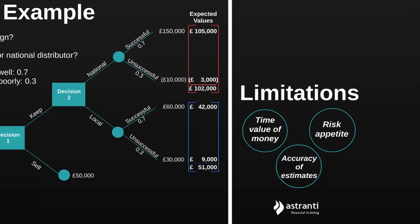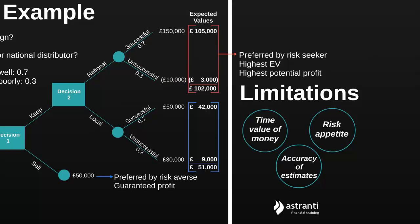The final limitation is that this approach to decision making has not involved any consideration of the organisation's risk appetite. We chose keeping the design and selling through the national distributor as this generated the greatest expected value. However, this decision rests on an assumption — specifically, the assumption that our organisation is more risk seeking than risk neutral. There is a 30% chance that taking this decision will lead to a £10,000 loss. Contrast this with selling our product directly to the competitor, which generates guaranteed profit with no chance of making a loss at all — a decision that would be preferred by a sufficiently risk-averse company.